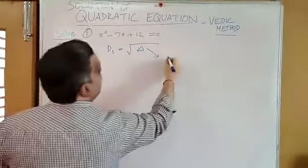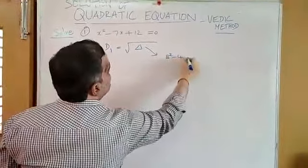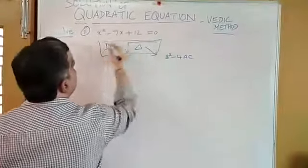Here, b square is equal to b square minus 4ac. D1 is equal to plus or minus square root of delta.